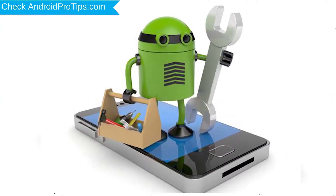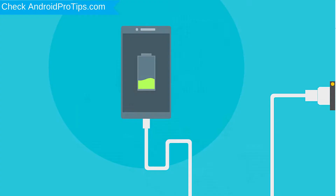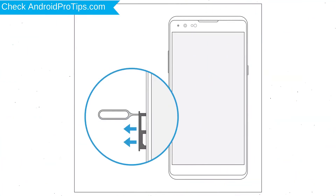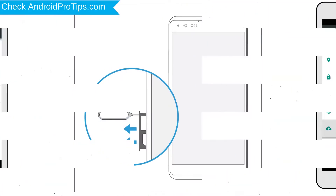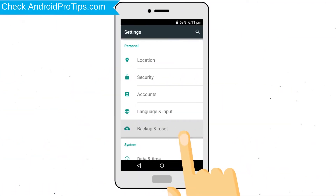Before resetting your mobile, your mobile battery must be above 50%. Remove SD cards and SIMs. Back up your Android mobile data if possible.